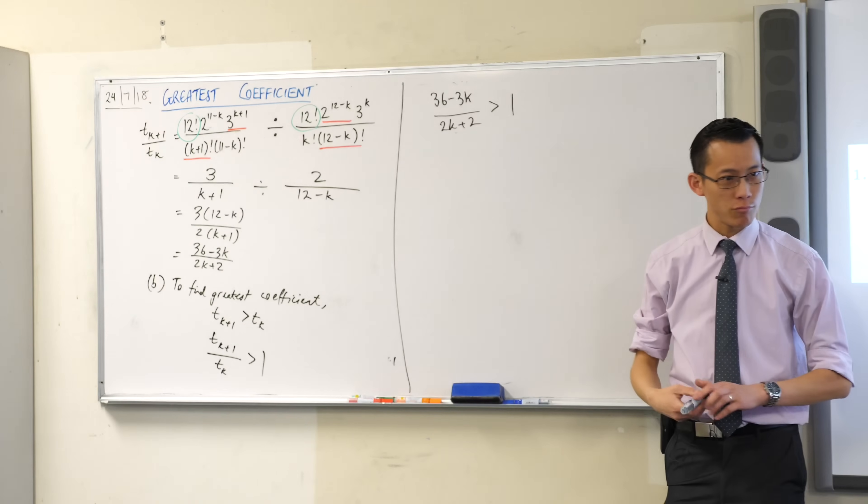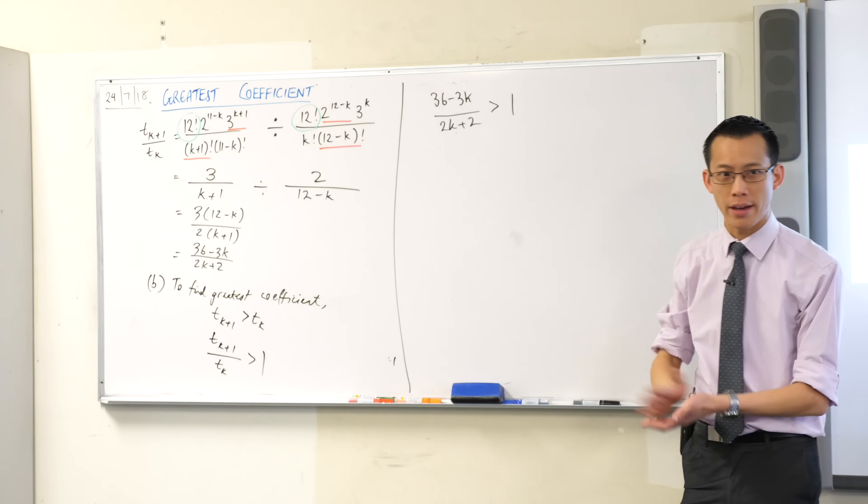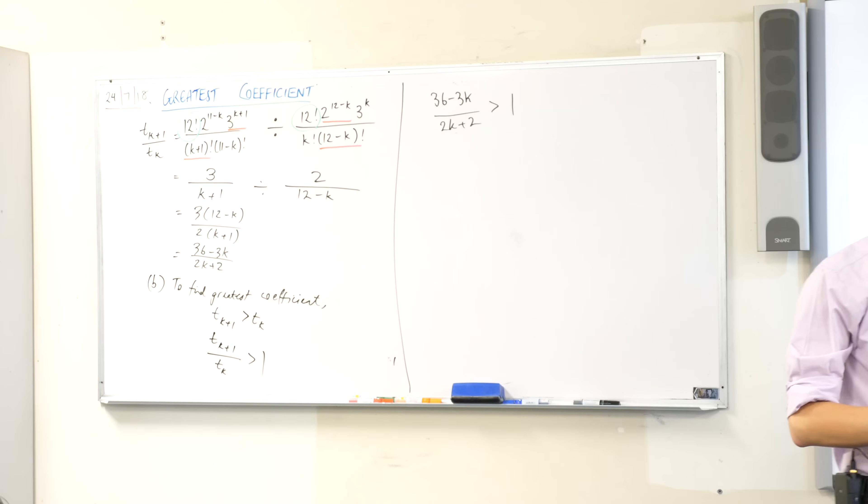(36 - 3k)/5 > 1. Can you go ahead and solve that for me? It won't take you many lines, just go ahead. Just be careful with your algebra and your negative signs.